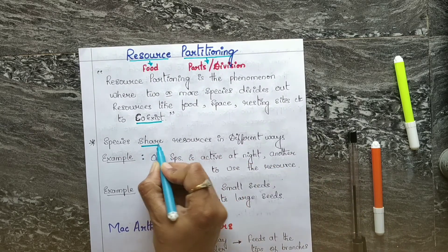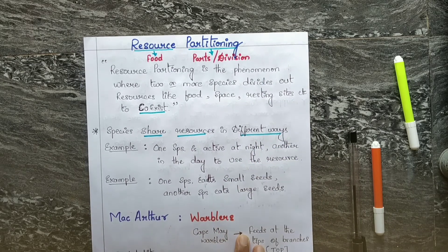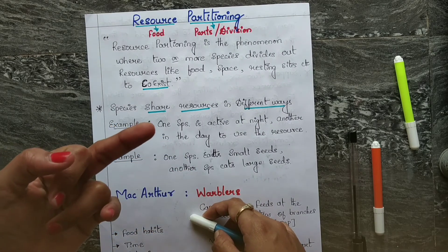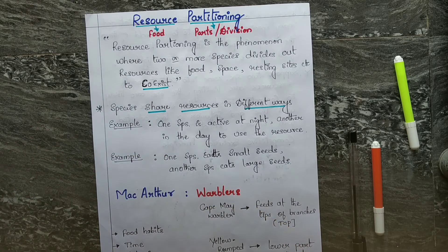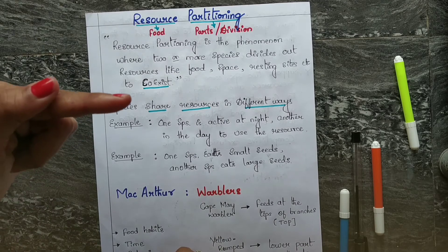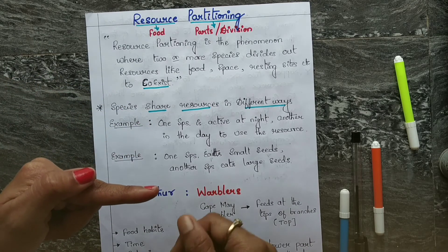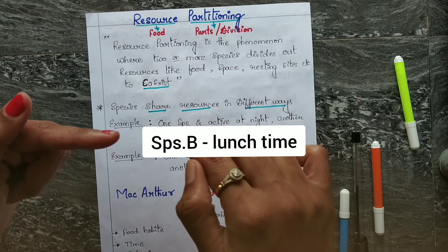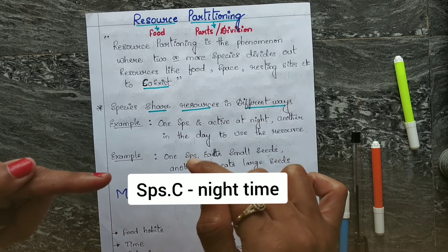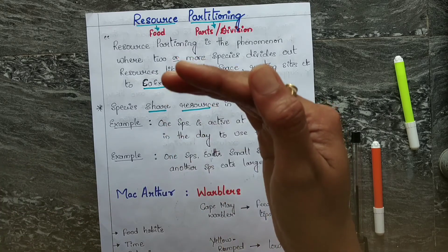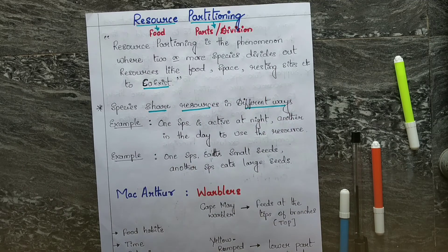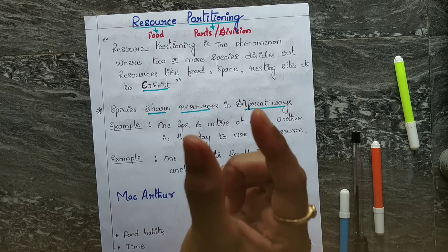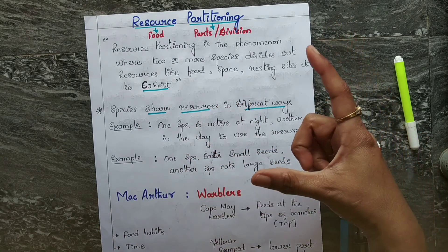Species share resources in different ways. For example, one species may be active at night, one species may be active in daytime so that they use the resource. For example, species A, B, and C: species A eats in the morning, species B eats at lunch time, and species C eats in the evening or night time. In different timings they can use the resource. That is also possible. And for a second example, one species can eat small seeds and another species can eat the larger seeds.